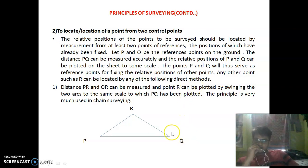Distance PR and QR can be measured and point R can be plotted by swinging the two arcs to the same scale to which PQ has been plotted. This principle is very much used in chain surveying.